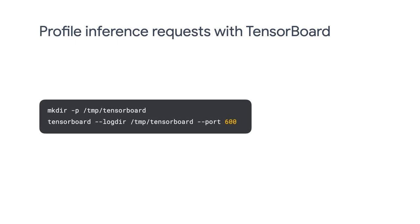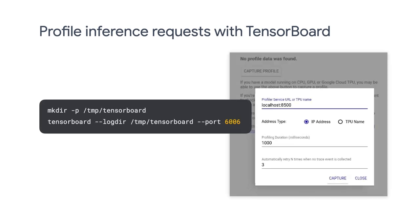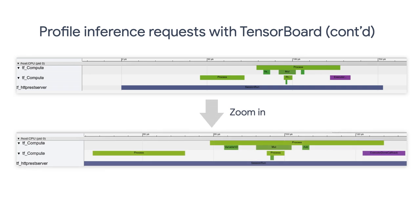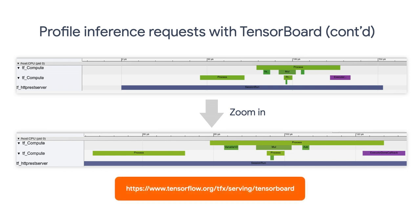If you have trained any machine learning model before, I'm sure you're already familiar with TensorFlow. TensorFlow Serving seamlessly works with TensorFlow as well — you can easily start a TensorBoard instance and capture profiling information. After you send some requests to TF Serving, you can analyze the trace to find out where your bottlenecks are and potentially redesign your model to get rid of those bottlenecks. Please visit the TensorBoard guide to learn more.